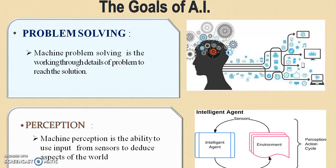The next goal is problem solving. If the machine can solve problems — that is, work through the details of a problem to reach a particular goal or solution — then the machine has the capability of problem solving.